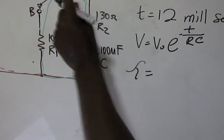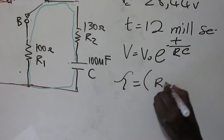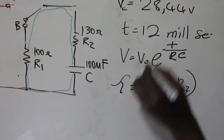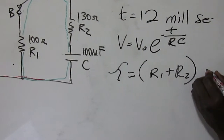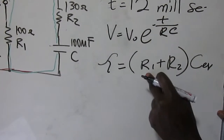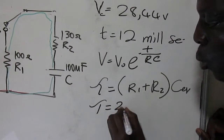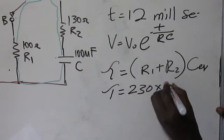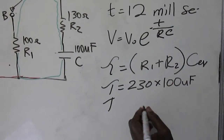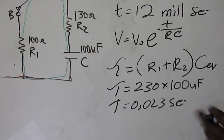Since both resistors are now in series during discharge, the equivalent resistance is R1 + R2 = 100 + 130 = 230 Ω. The new time constant is τ = 230 × 100 × 10⁻⁶ = 0.023 seconds.